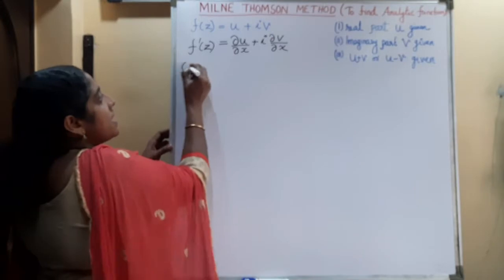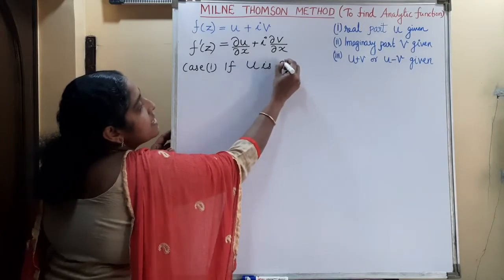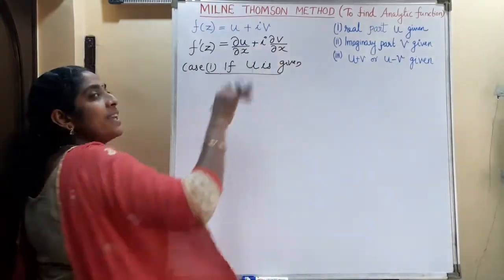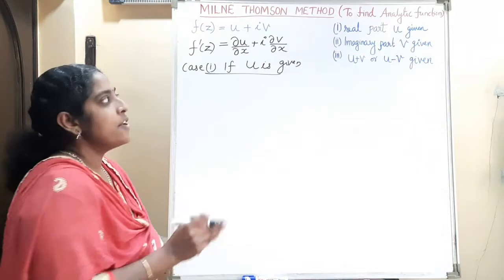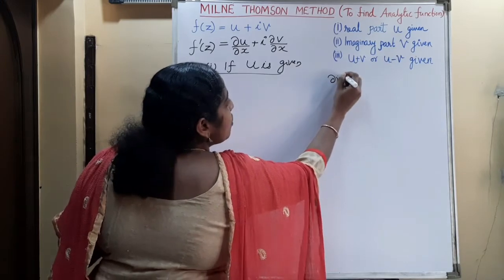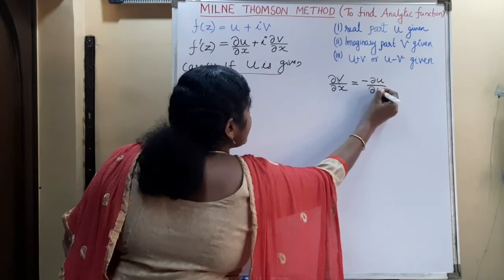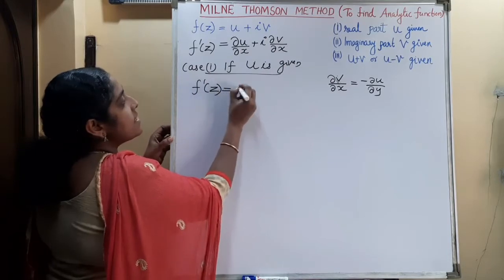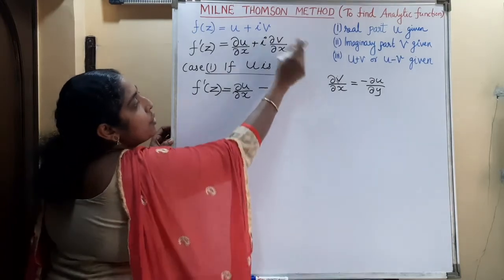Case 1: if the real part U is given, we don't know the imaginary part V. So we replace the V term using the Cauchy-Riemann conditions. The second Cauchy-Riemann condition gives ∂V/∂X = −∂U/∂Y. Substituting, F'(z) = ∂U/∂X minus i·∂U/∂Y.